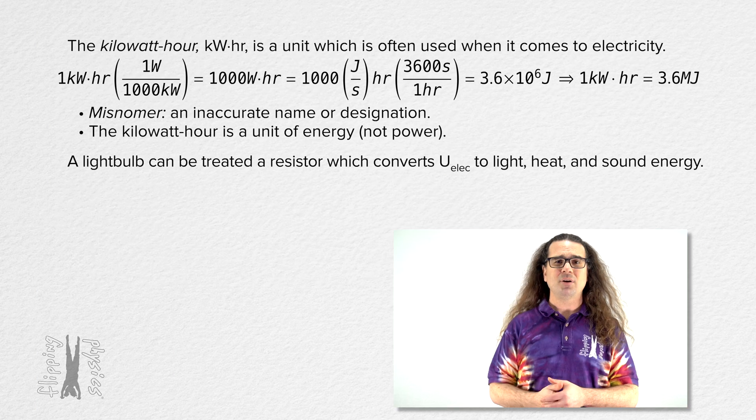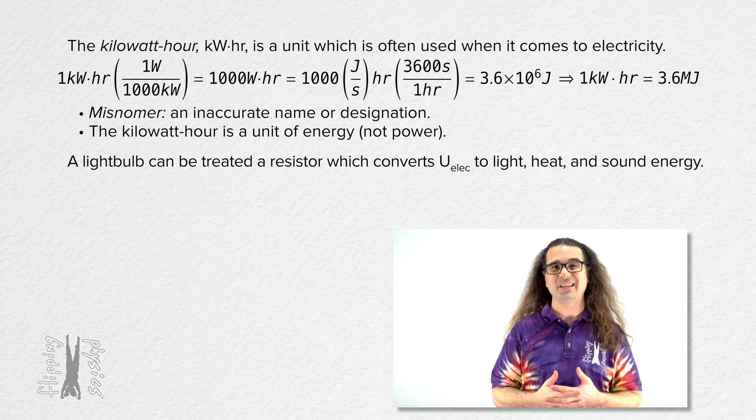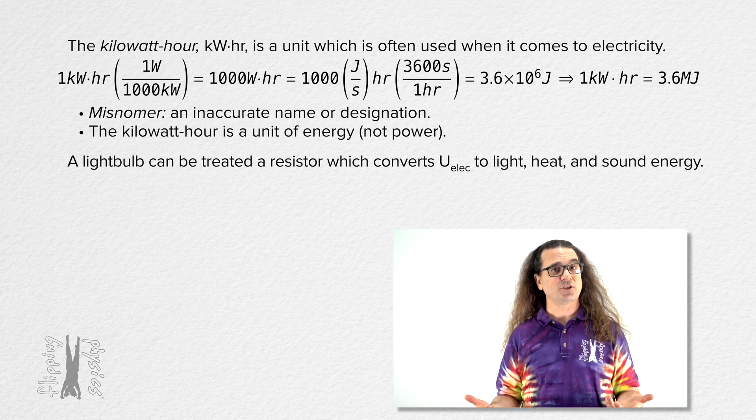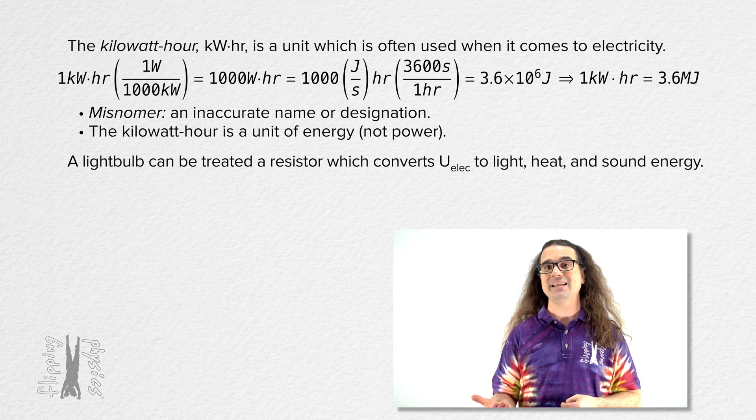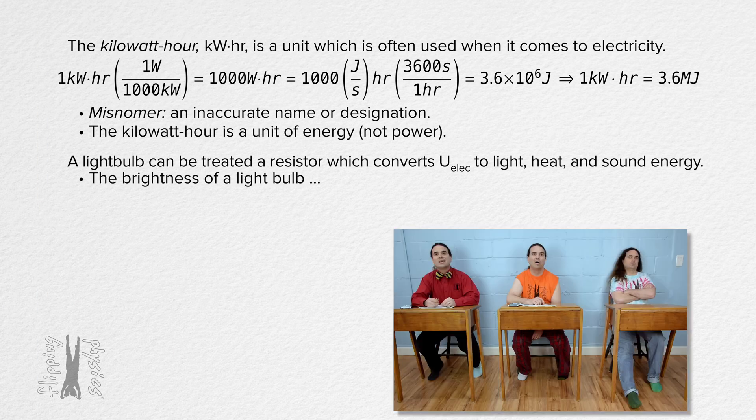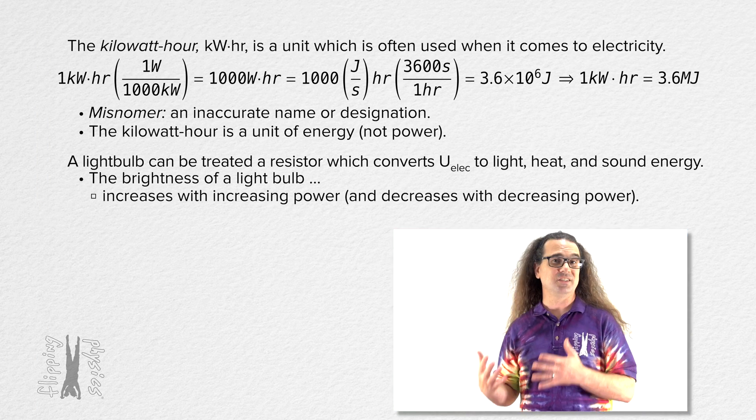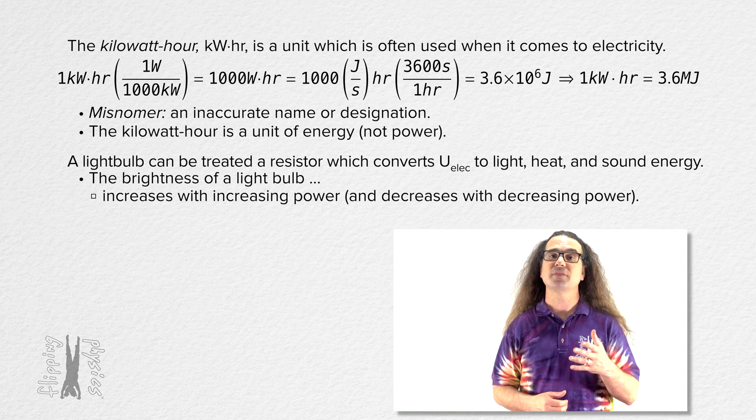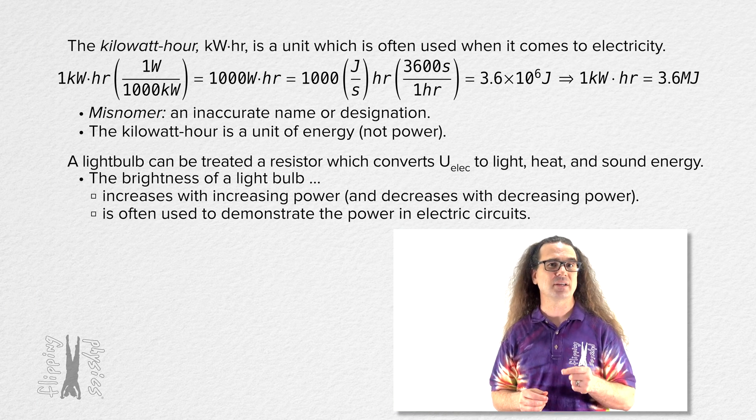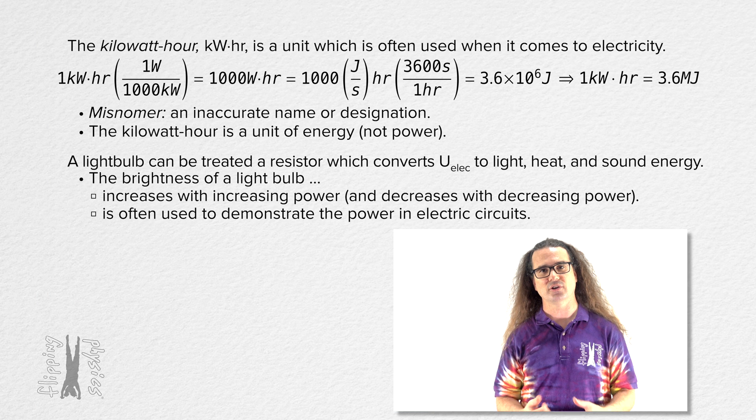Alright. So, a light bulb is a common item used in physics. A light bulb can be treated as a resistor which converts electric potential energy to light, heat, and sound energy. And the brightness of a light bulb increases with increasing power and decreases with decreasing power. Therefore, the brightness of a light bulb is often used to demonstrate the power in an electric circuit.